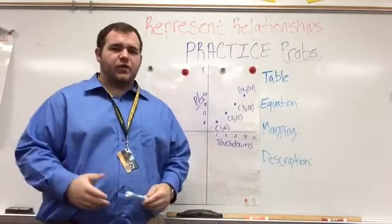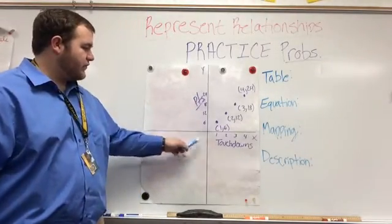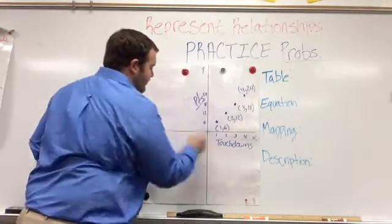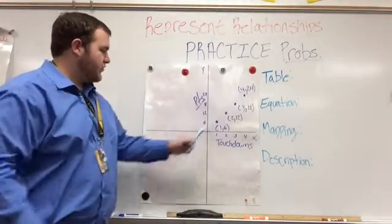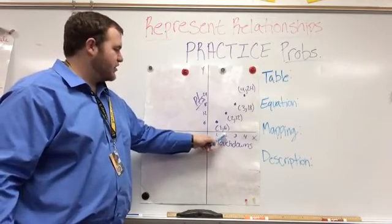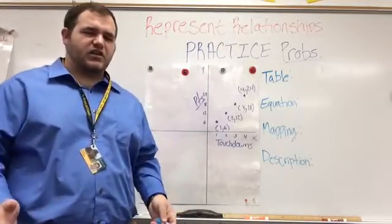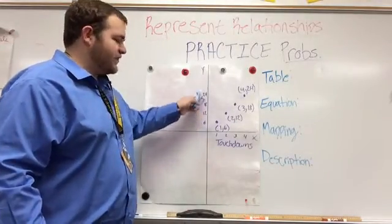Now what I want you all to do for the practice problem for tonight that you'll submit is look at this graph. Here we have touchdowns and then points scored. So if you score one touchdown, you're going to score six points. If you score two touchdowns, you'll score 12 points. We're not going to worry about the extra points, we're just going to do the touchdowns. So we're going to be counting by sixes each time.